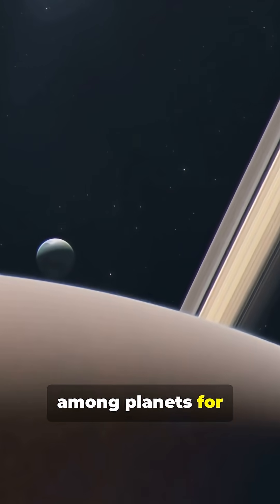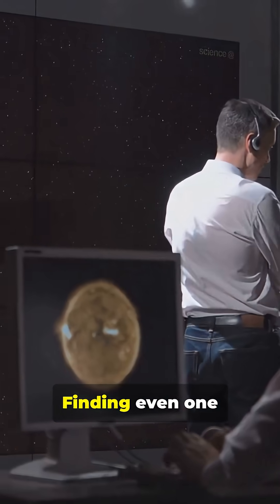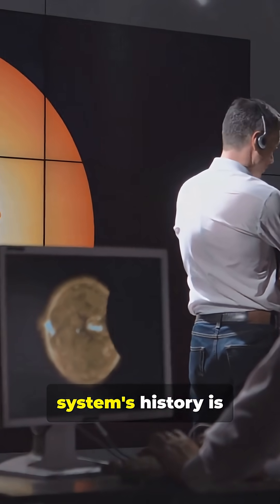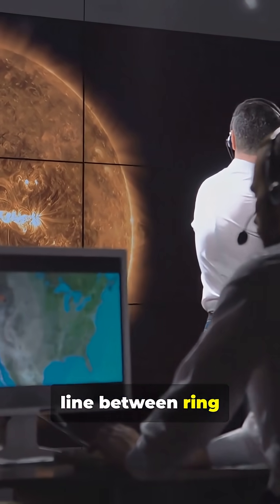Uranus is unique among planets for having so many small moons intertwined with its ring system. Finding even one more suggests the system's history is far more chaotic and dynamic than we thought, blurring the line between ring and moon.